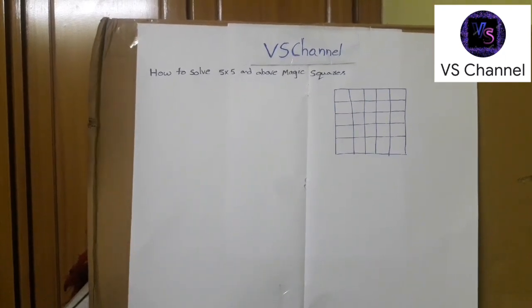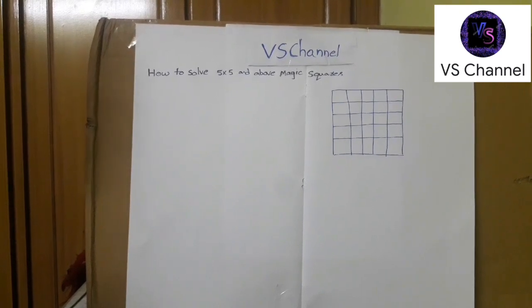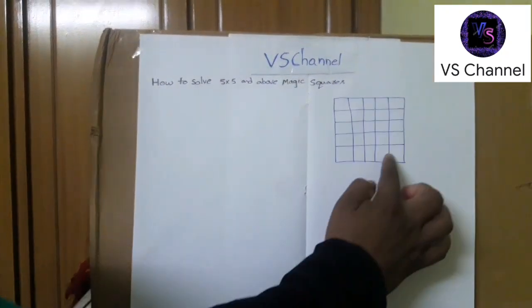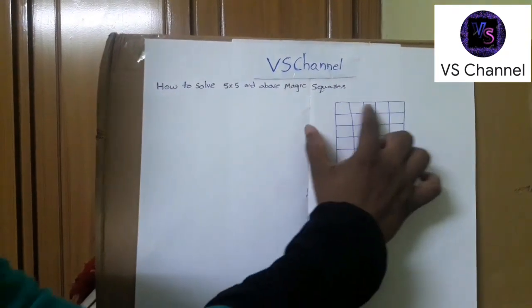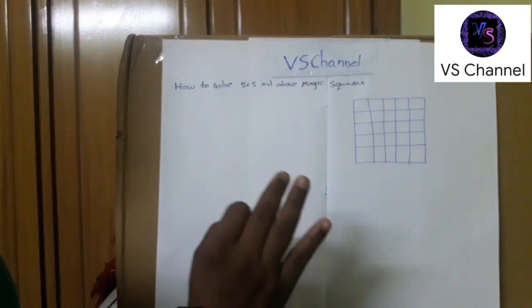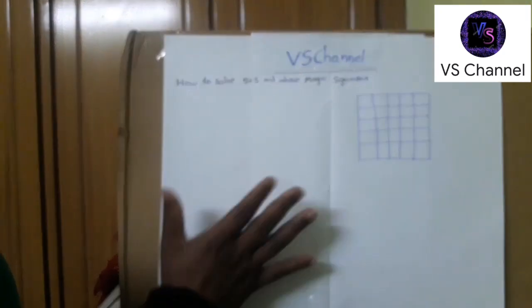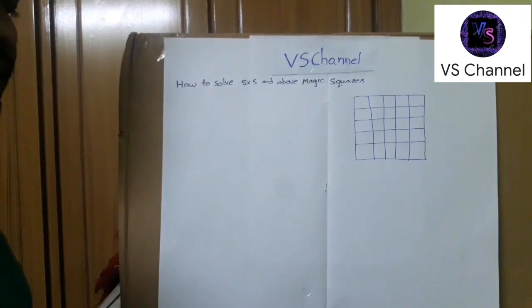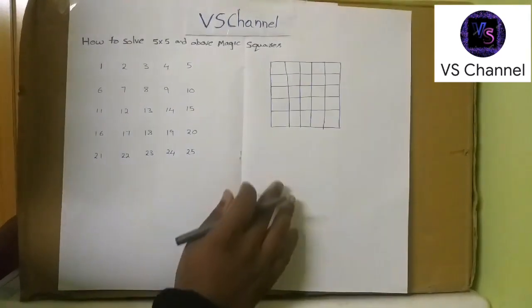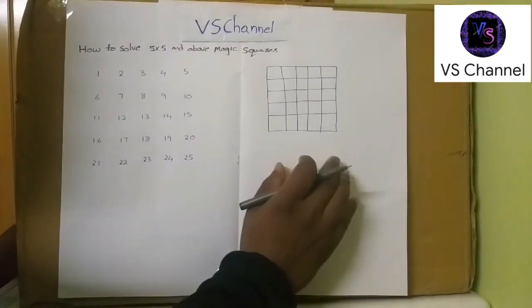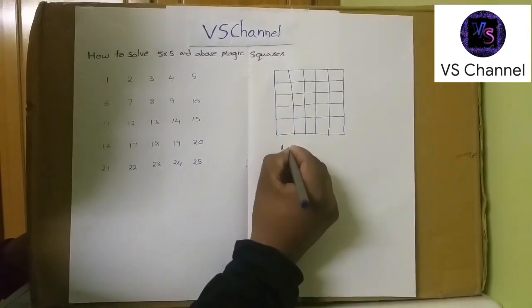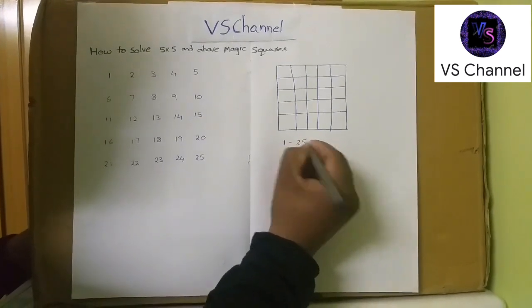So today we can see the 5 into 5 with the same logic and a new logic also. The same logic I explained in the previous video. Here the 5 into 5 matrix I have taken has 5 rows and 5 columns, so totally we have 25 cells. In 5 into 5 magic square we have 25 cells means we need to take 25 successive natural numbers. So here in this example I have taken numbers 1 to 25.